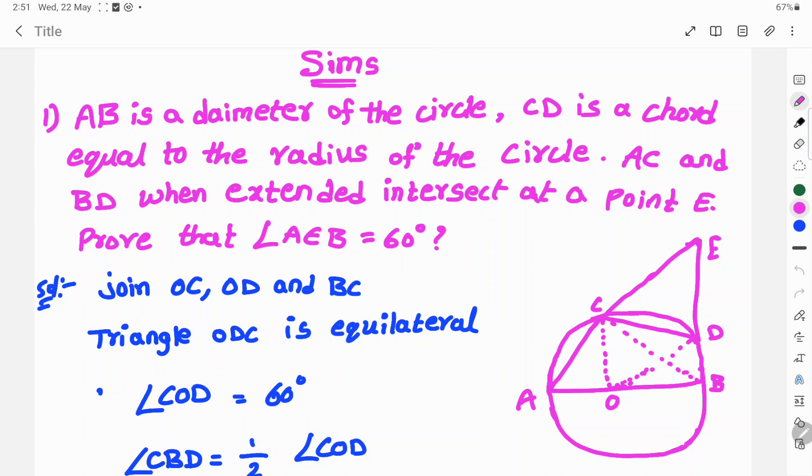Here, AB is a diameter of the circle. CD is a chord equal to the radius of the circle. AC and BD when extended intersect at point E. Prove that angle AEB is equal to 60 degrees.